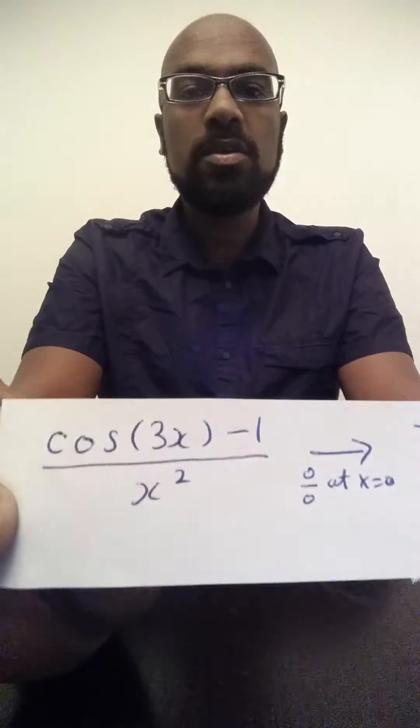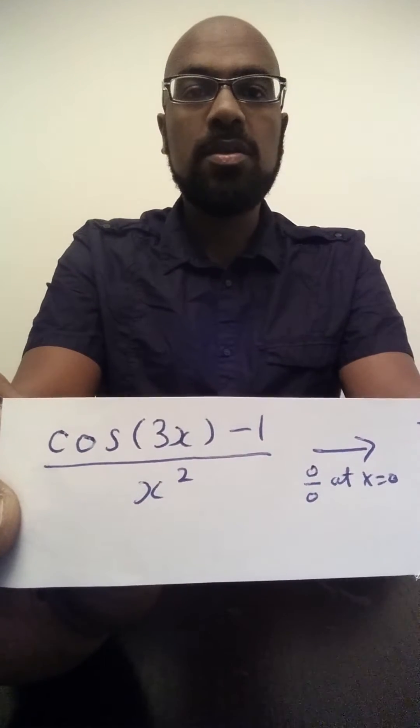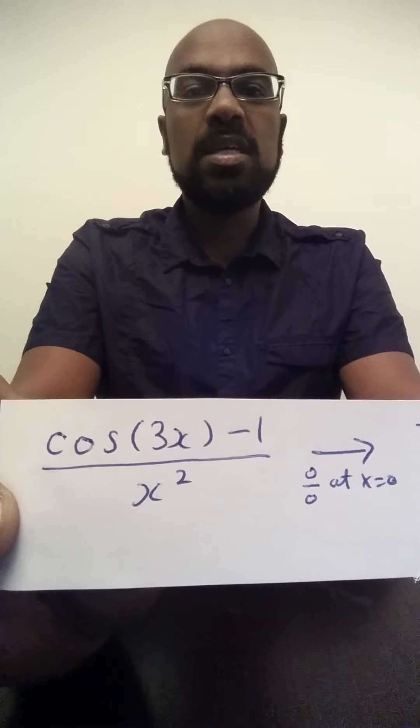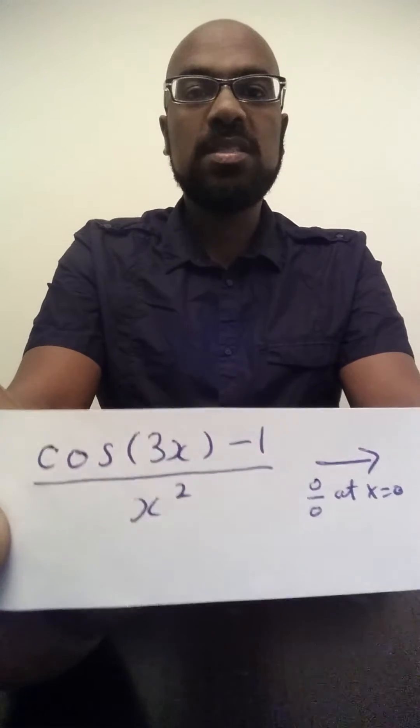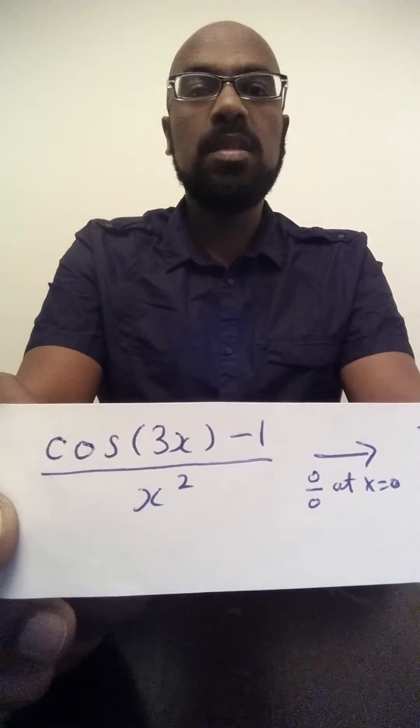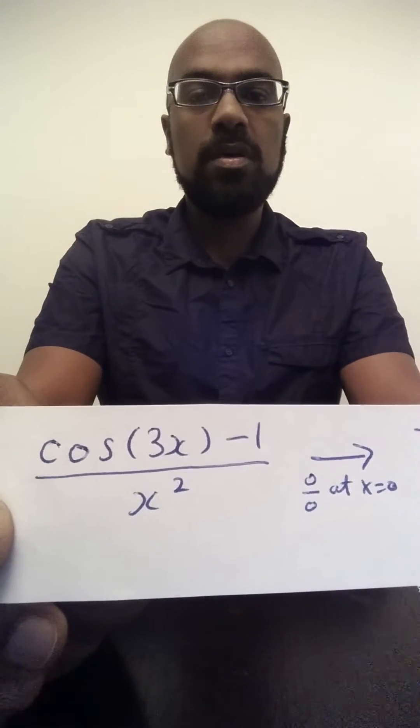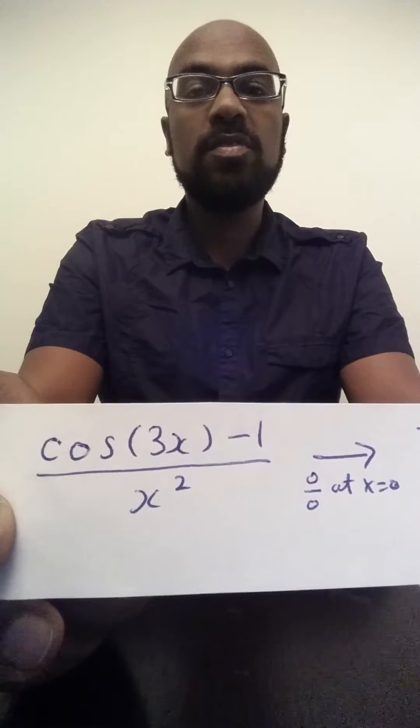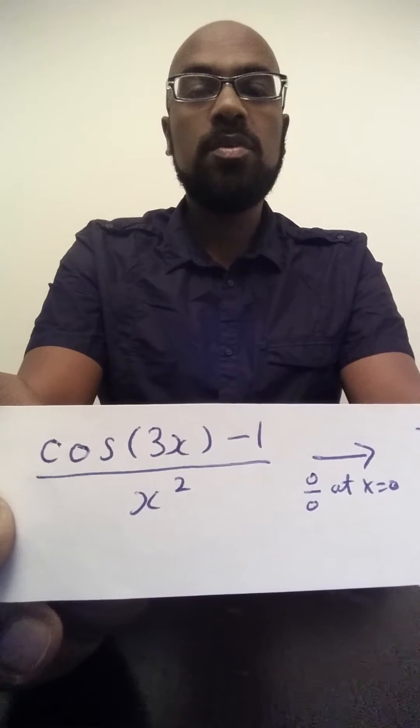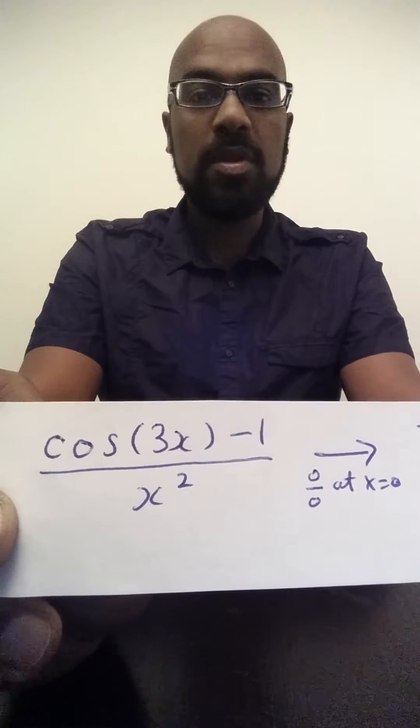So we'll differentiate the numerator, differentiate the denominator, and the limit as x approaches 0 of this function is going to be the same as the limit as x approaches 0 of the derivative of the function, that is the derivative of the numerator divided by the derivative of the denominator.